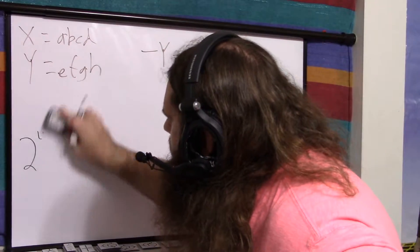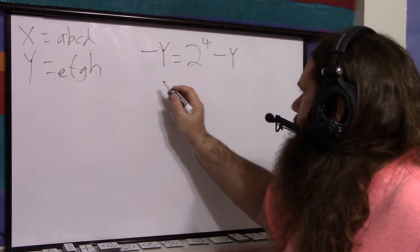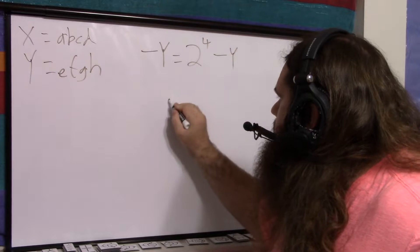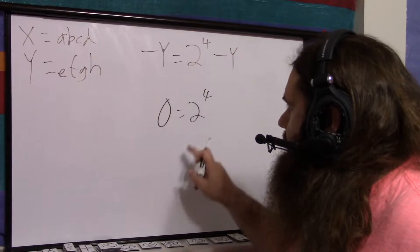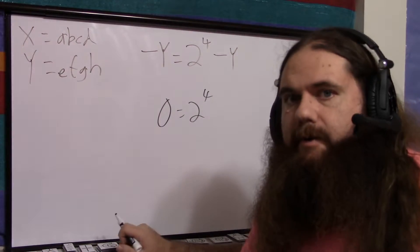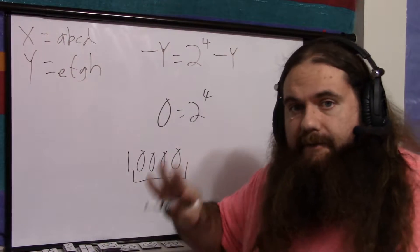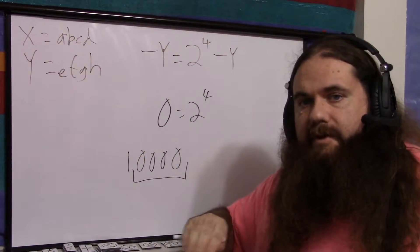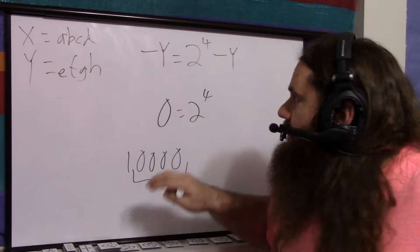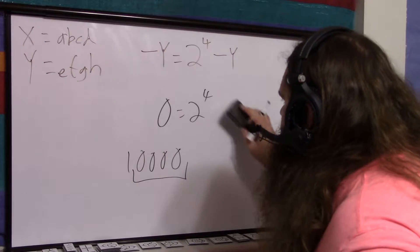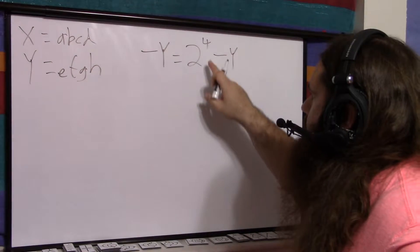And if you're paying attention, you may have been screaming at your screen. Because if you look at what I've written — minus Y equals 2 to the 4 minus Y — in other words, 0 equals 2 to the 4. But remember, we're limited to 4 bits. 2 to the 4 is 1, 0, 0, 0, 0. We're limited to 4 bits, so it is 0. If you limit yourself to 4 bits and ignore everything after, you keep it during the math, but at the end you just take the last 4 bits. 2 to the 4 does equal 0. That's the trick — this works because we're limiting ourselves to a certain number of bits.